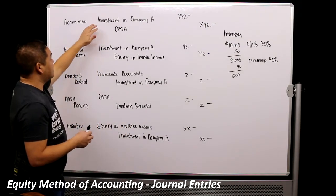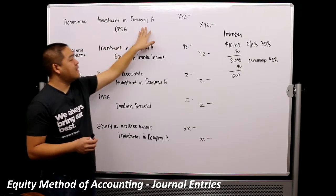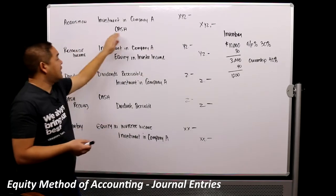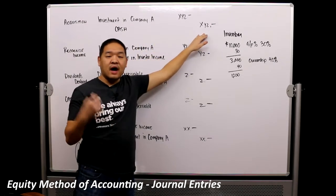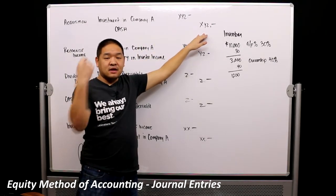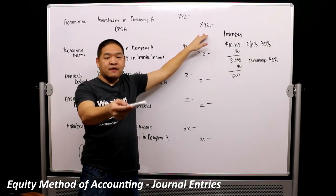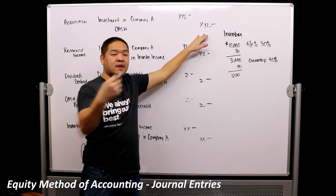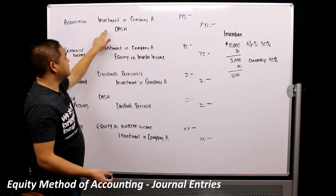We're going to debit an account called investment in Company A for, let's just say, $100,000, and we would credit cash for $100,000. So I'm deciding to invest in Company A, let's say 25% of their company for $100,000, so I'm going to have to give them $100,000, which means my cash decreases.